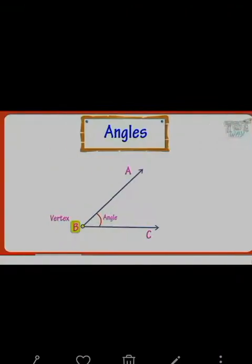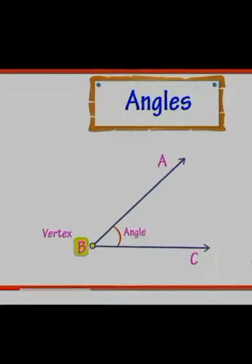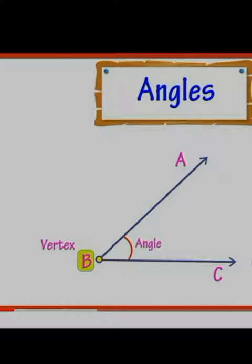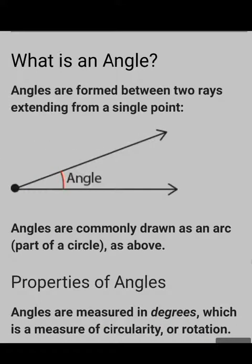First of all, you must know what is an angle. Two rays with a common end point form an angle. You can see here AB and CB are two rays — they meet at point B. So there is formation of angle ABC, and the middle letter where these two rays meet is called the vertex of the angle. So B is the vertex. Angles are formed between two rays extending from a single point and are commonly drawn as an arc. Angles are measured in degrees.